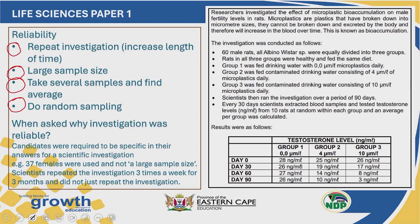Let's have a look at how to answer questions on reliability. The first thing you must remember is that when you are asked why an investigation was reliable, you need to answer this question specifically for the scientific investigation in your question paper. For instance, don't just say there was a large sample size — say that 37 females were used in this investigation. Don't just say they repeated the investigation — say they did this investigation three times a week for three months. Always be specific.